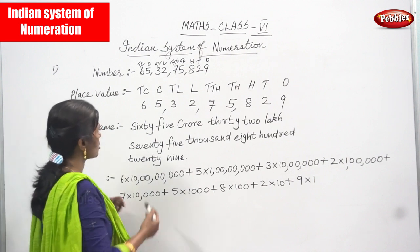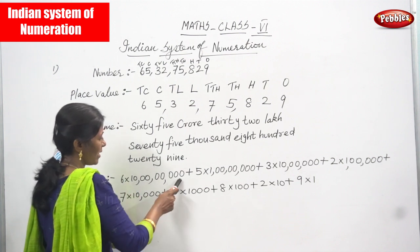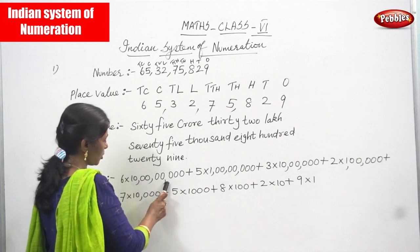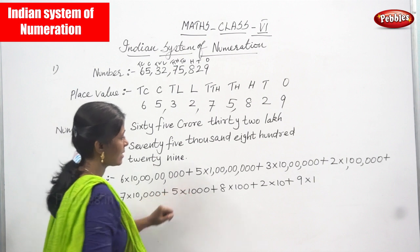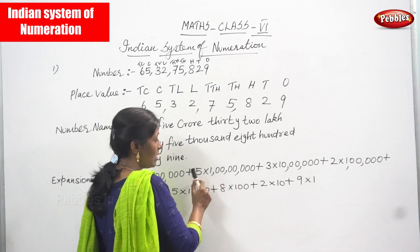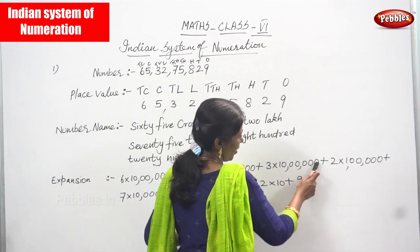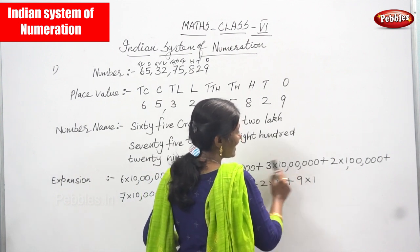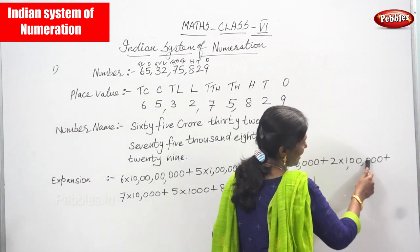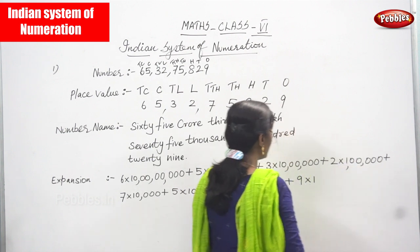For the expansion form: 6 into 10 crore = 60 crore, plus 5 into 1 crore = 5 crore, plus 3 into 10 lakhs = 30 lakhs, plus 2 into 1 lakh = 2 lakh.